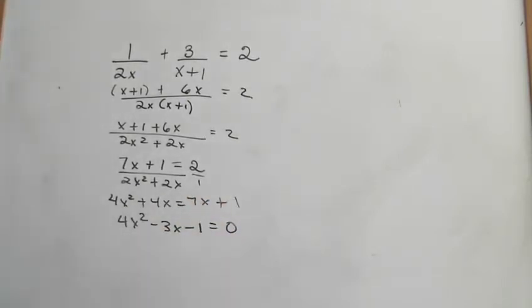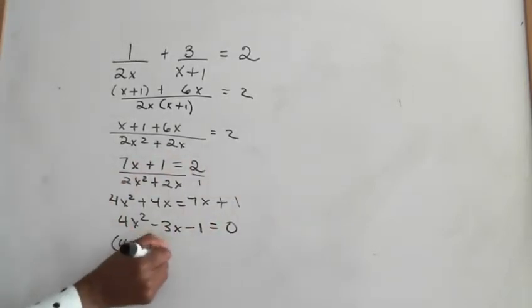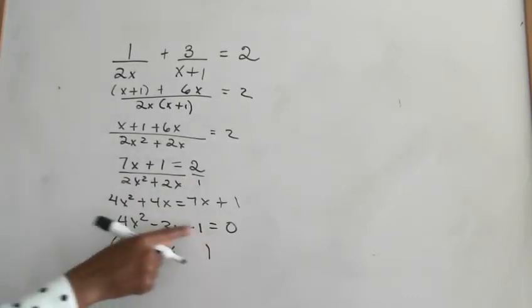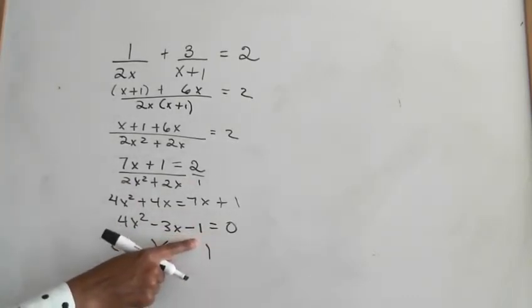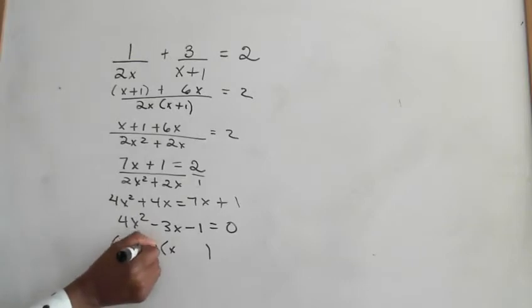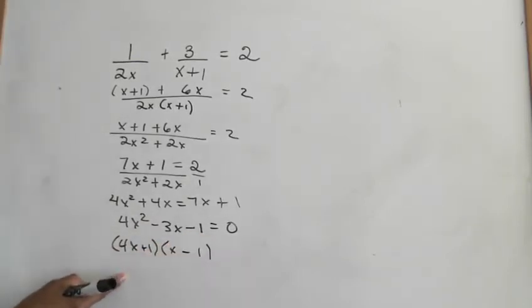So now it's just a matter of factoring this out. Now, we can say 4x and x, because that's how we get 4x squared. We have a product of negative 1, so I know that I'm going to multiply by 1. Let me test it, if it doesn't work, you change the signs. So I'm going to say 4x plus 1 times x minus 1.